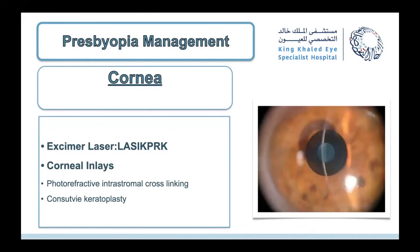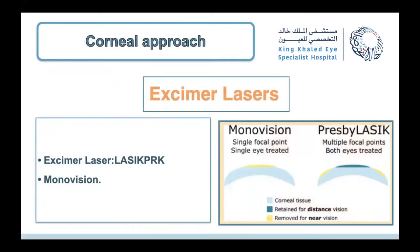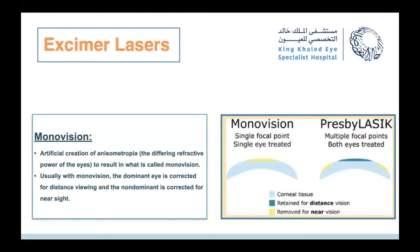The corneal approach can be divided into two forms: laser vision correction (excimer laser) or corneal inlays. With corneal laser, we either induce monovision — correcting one eye for distance and the other for near — or use the concept called presbyLASIK. In standard monovision with laser, the dominant eye is corrected for distance and the non-dominant for near.